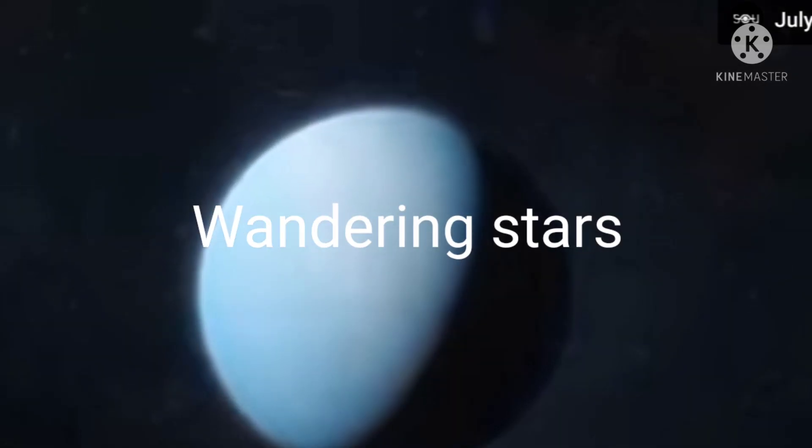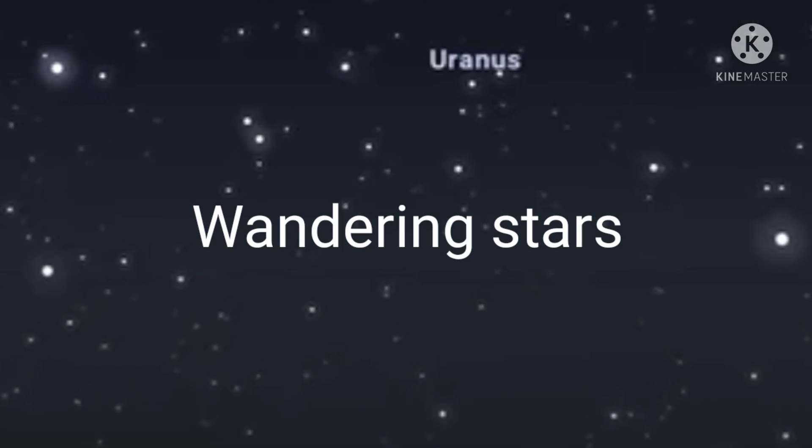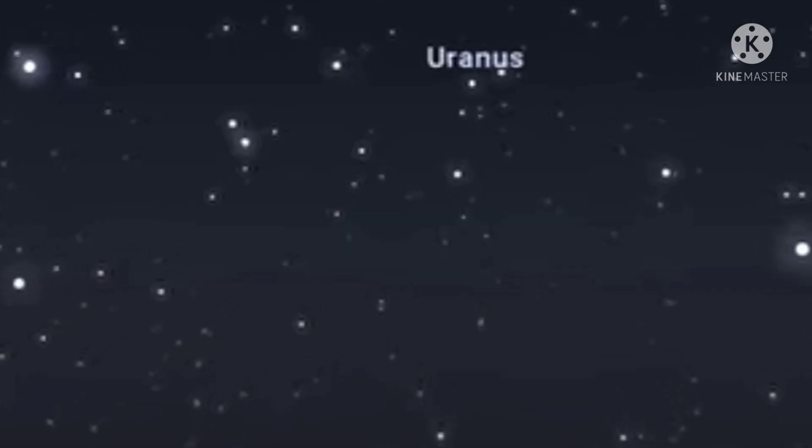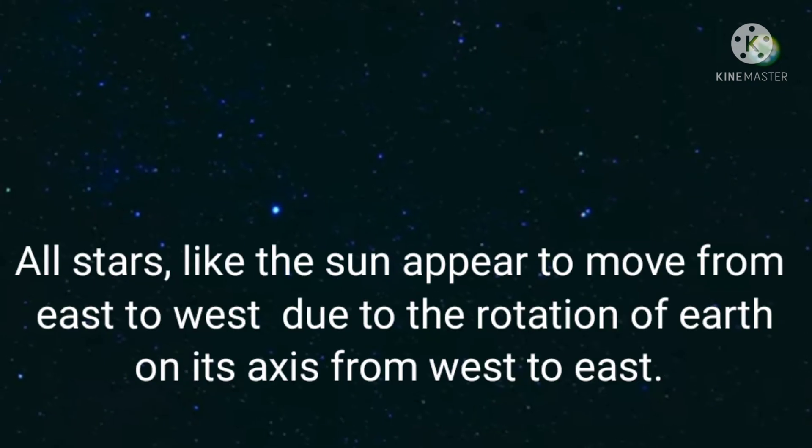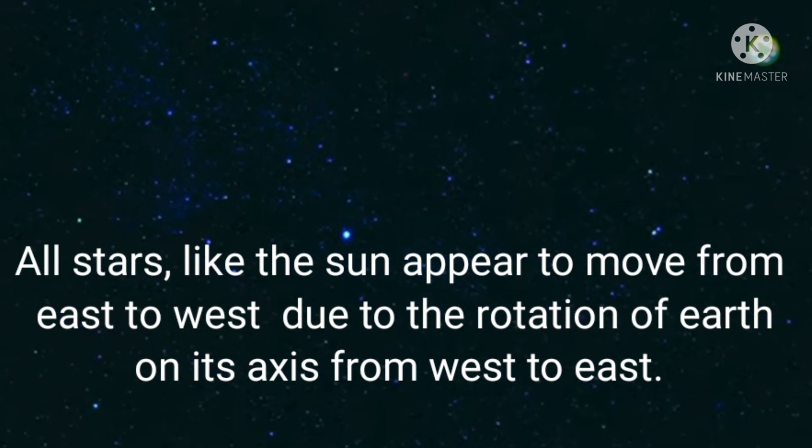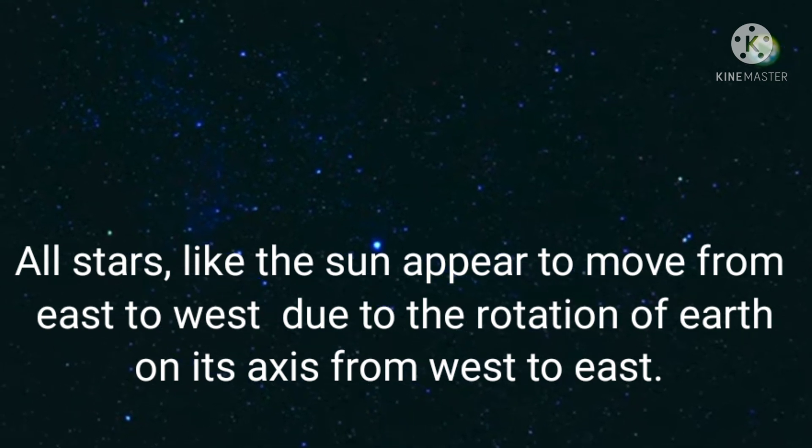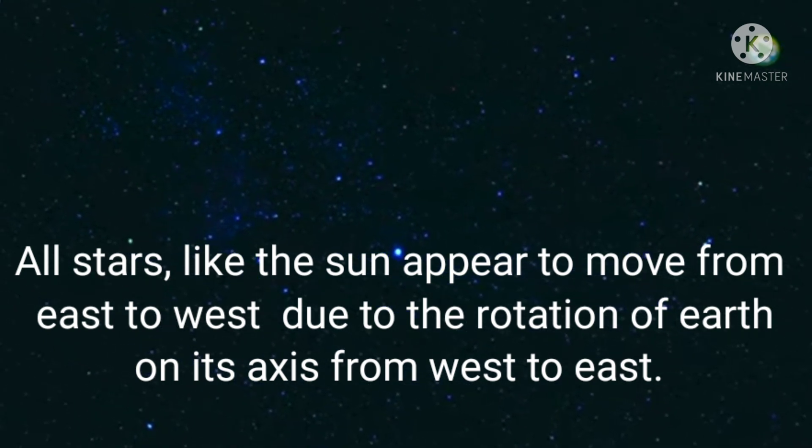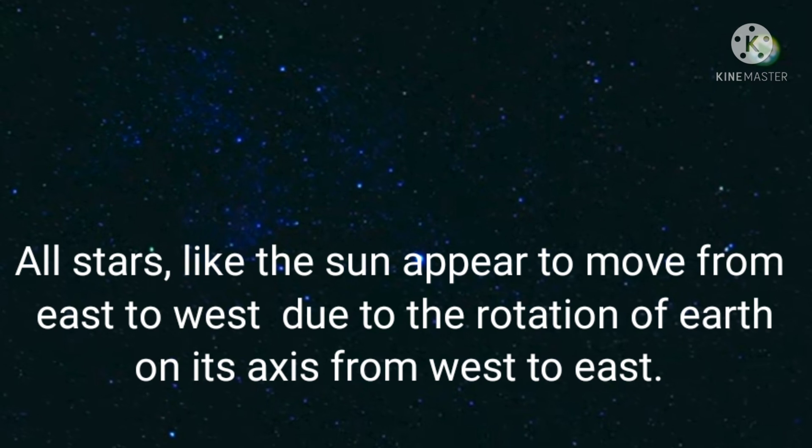Dear children, we now know that stars do not appear to move with respect to each other in the sky. However, if one closely observes some bright stars for an hour or so, it will be found that there is a slight shift in the position of these stars in the sky. Stars like the sun appear to move from east to west. This, as we have now understood, is due to the rotation of Earth on its axis from west to east.